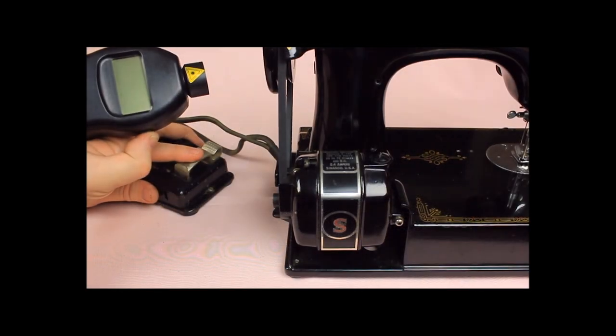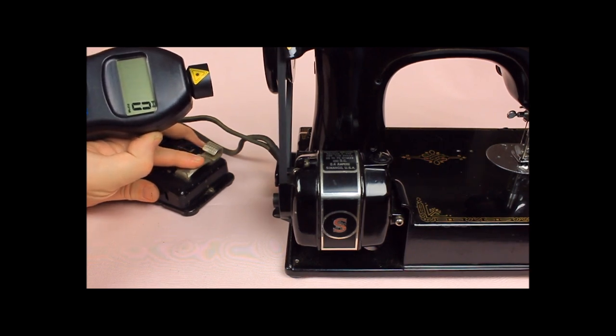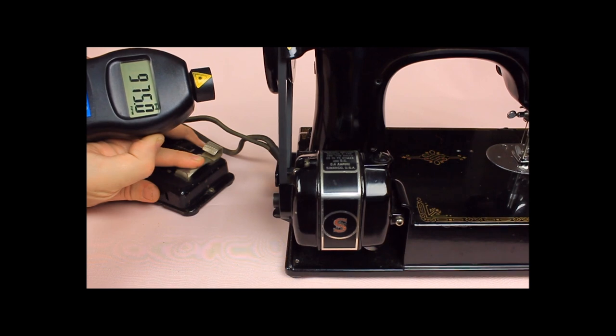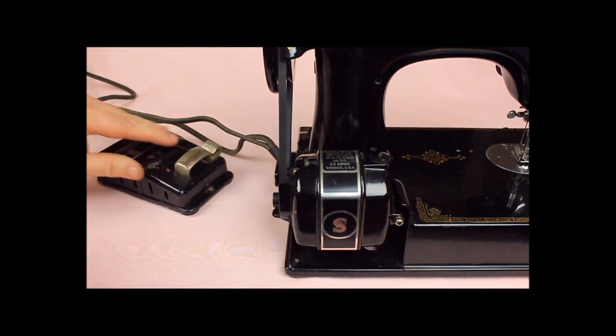As you can see from this RPM demonstration on this machine that hadn't had its motor lubricated in quite some time, the RPMs of the motor turning the hand wheel reached a high of 1246 rotations per minute prior to being lubricated.